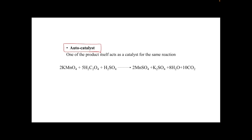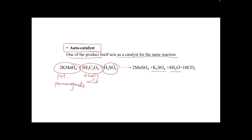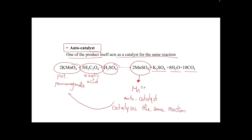A special case of catalysis is autocatalysis, which occurs when one of the products of the reaction acts as a catalyst for the same reaction. An example is the oxidation of oxalic acid with potassium permanganate in acid medium to produce potassium sulfate, water, carbon dioxide, and manganese sulfate. The manganese ions in manganese sulfate act as a catalyst, catalyzing more of the same reaction — a product catalyzing the reaction to proceed further.